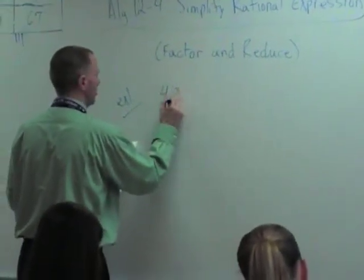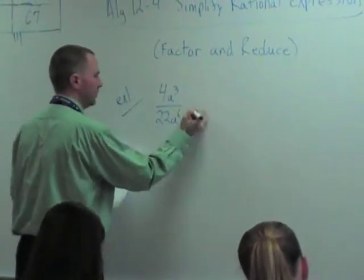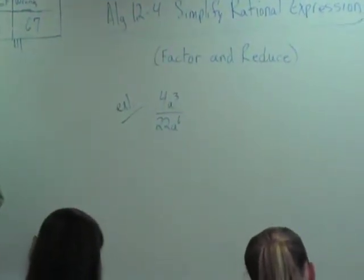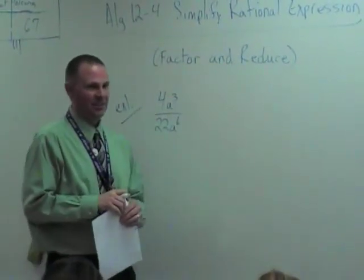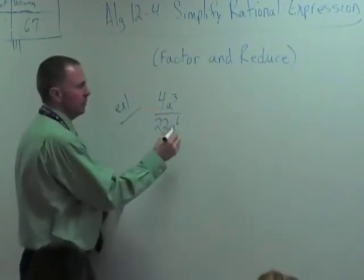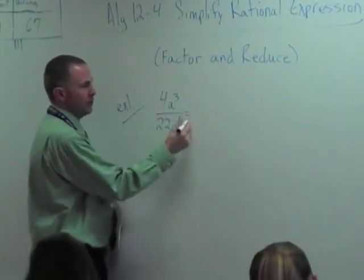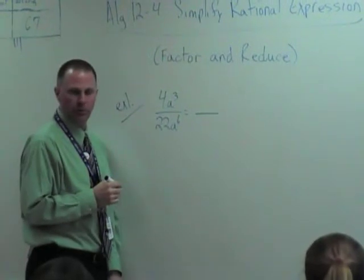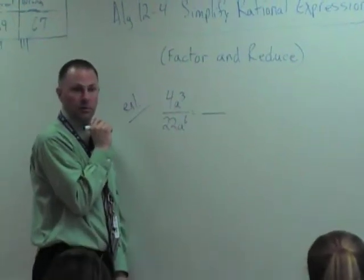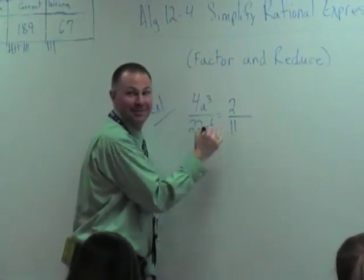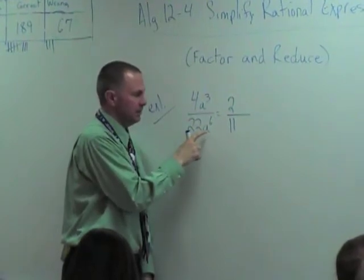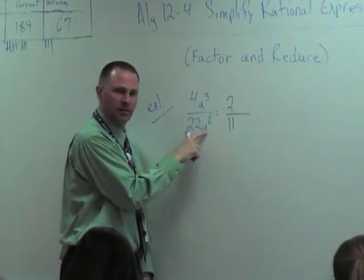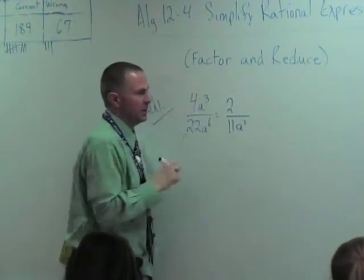Example one: 4a cubed over 22a to the 6th. Everybody simplify that, please. You can go as far as you can go. So if you're struggling on what to do, you really just look at 4 over 22. What does that reduce to? Those are divisible by 2, so you get 2 over 11. And then you have 3 a's. That'll cancel with 3 of these a's, leaving 3 left. So that's what that reduces to.